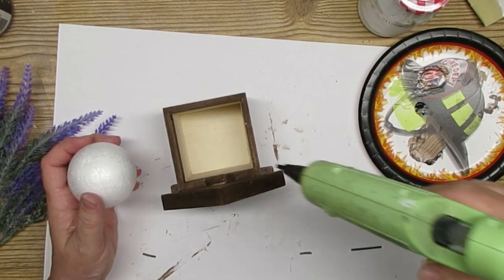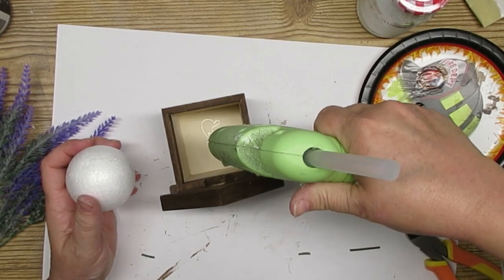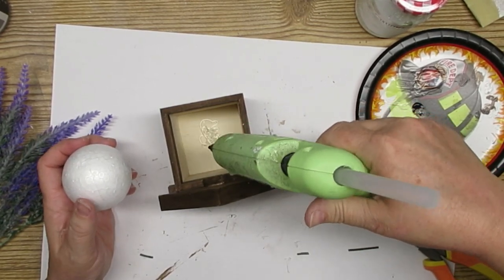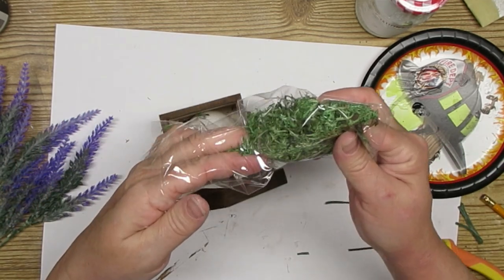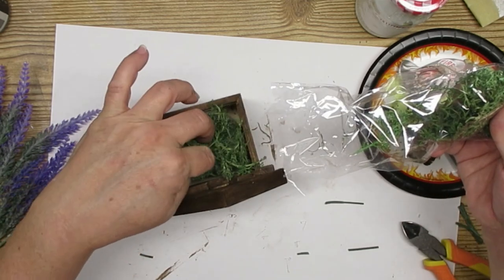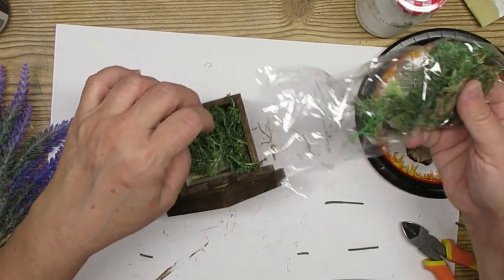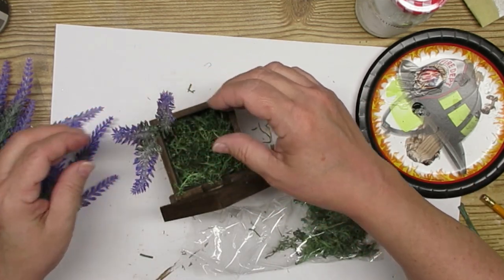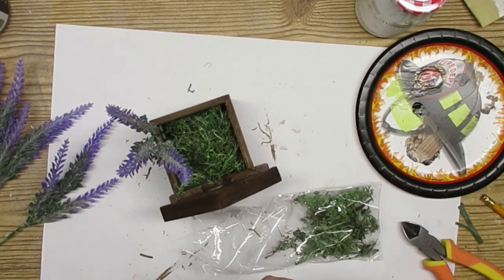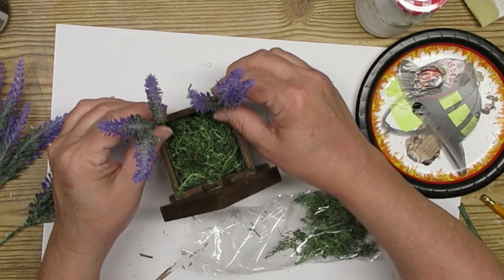I'm going to go ahead and glue a styrofoam ball in here. These are just ones that I had left over in my stash and I thought you know what it fits perfectly in there so that'll just be what I use to poke in my florals. I'm going to add a little bit of reindeer moss just to camouflage that styrofoam ball and I think this one turned out absolutely adorable.